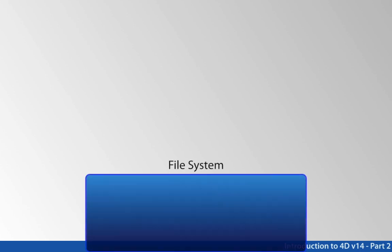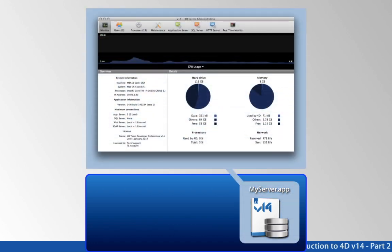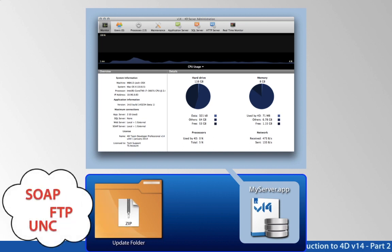I'll run through how it works. I've got a 4D application sitting in my file system and that server is running, and I want to do an automatic update. The first thing you have to do is define an update folder — just a folder on the computer — and you tell 4D where that folder is. When you want to do an update, using whatever technology you choose, you need to get the latest server onto the machine. All of that can already be automated today — if you want to use FTP you can, or just do a network copy with a script. You get your new server onto the system, maybe extract it if it's zipped.